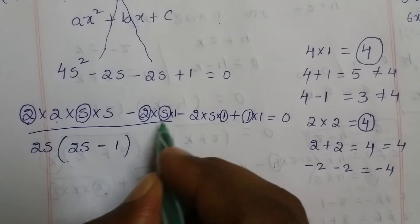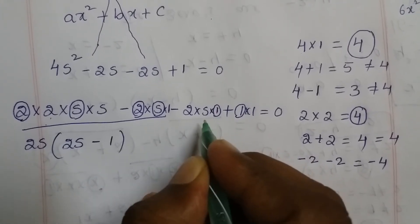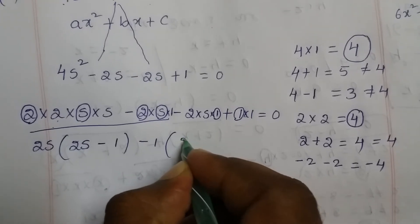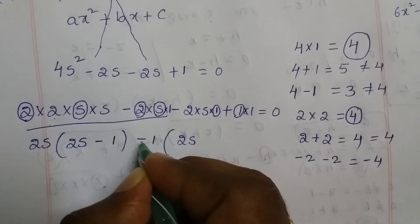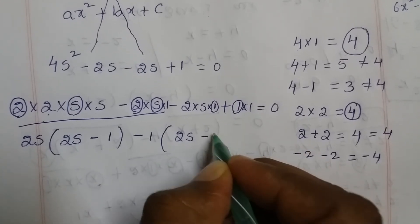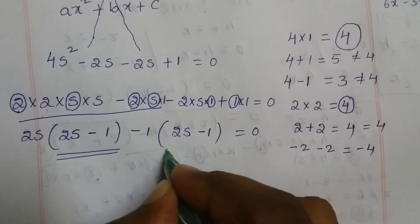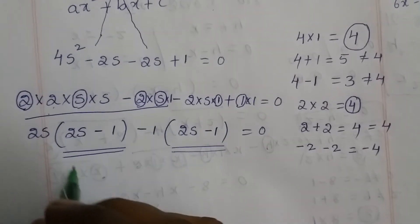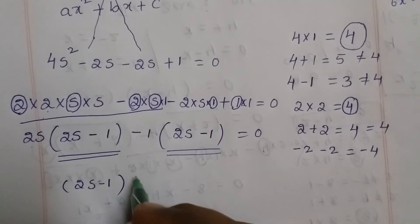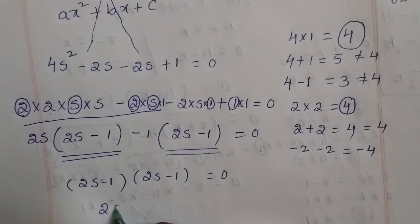For the second pair, minus 1 is the common thing. Note: minus into minus gives plus, so the symbol changes. We see that 2s minus 1 is the common factor. Write 2s minus 1 as the common factor outside.